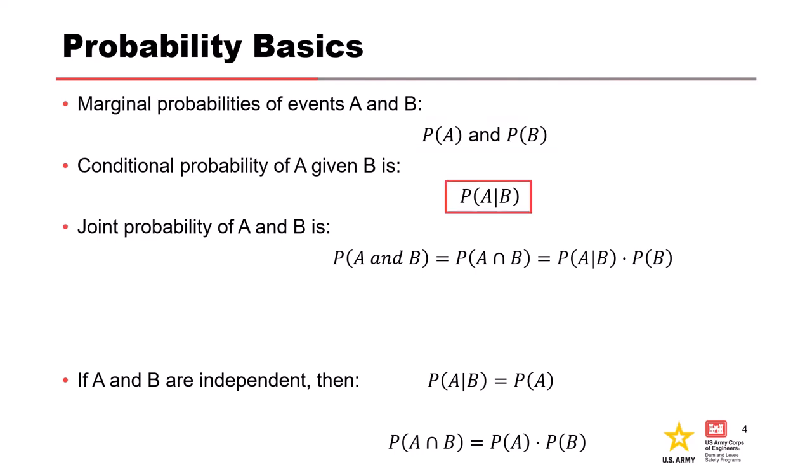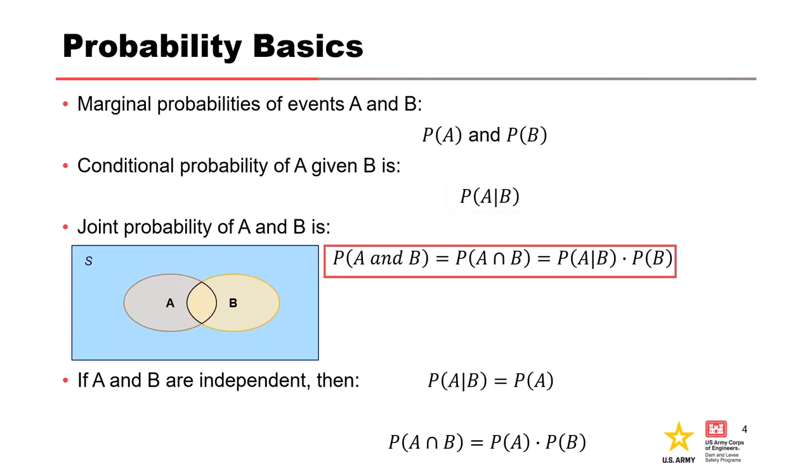We've got conditional probabilities — that's the probability of A given B. And then we've got joint probability, which is the probability of A and B. The upside-down U symbol means 'and'; if the U is right-side up, it's 'or'. The joint probability equals the conditional probability — probability of A given B — times the marginal probability of B.